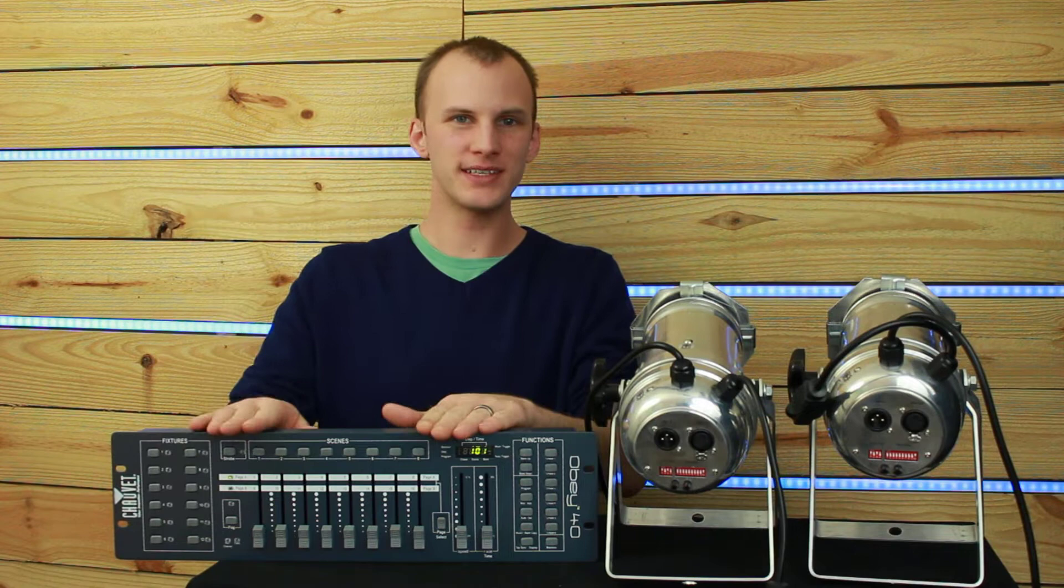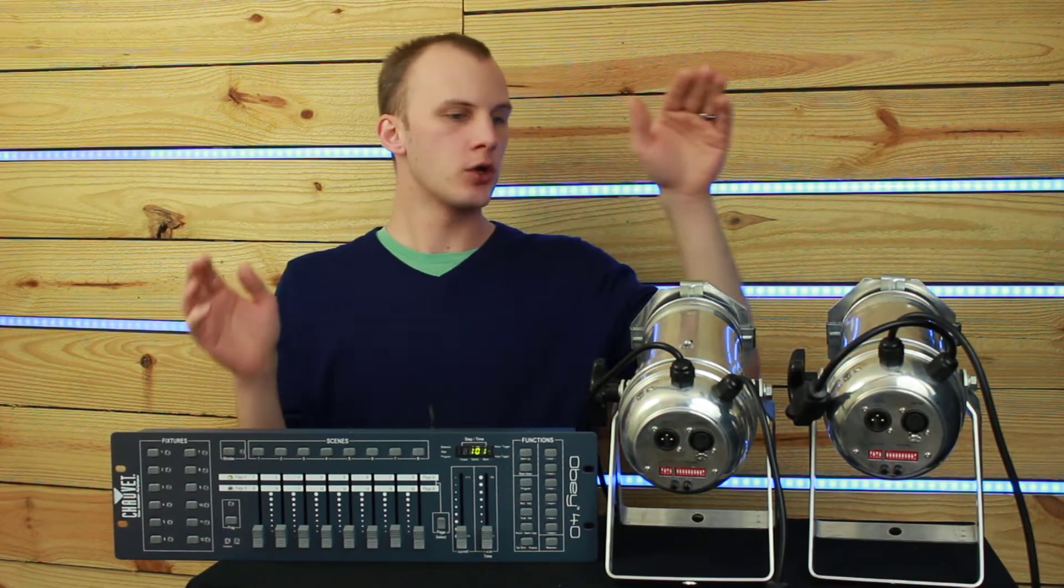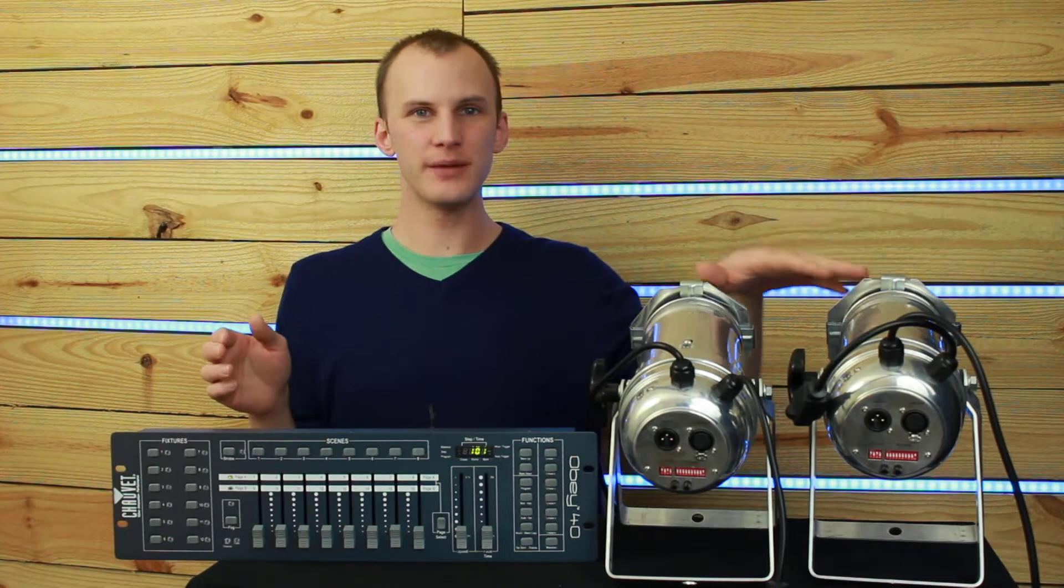And so in this example, we're just going to take a very basic DMX console, this Obey 40 from Chauvet. We're going to take these two cheap, no-name lights that honestly don't work very well and we're going to make them work together.